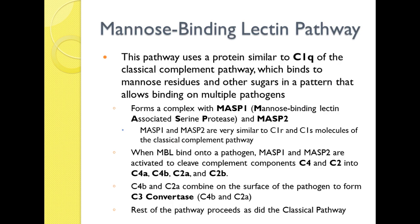The last pathway is the mannose binding lectin pathway. This pathway uses a protein similar to C1Q of the classical pathway, which binds to mannose residues and other sugars, but it forms a complex with MASP1 and MASP2 — mannose binding lectin associated serine proteases. MASP1 and MASP2 are very similar to C1R and C1S of the classical component. When mannose binding lectin binds onto a pathogen, MASP1 and MASP2 are activated to cleave components C4 and C2 into C4a, C4b, C2a, and C2b. C4b and C2a combine on the surface of the pathogen to form C3 convertase, and the rest proceeds just like the classical pathway.